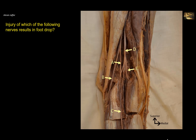Injury of which of the following nerves results in foot drop? First of all, let's be oriented. This is the diamond-shaped popliteal fossa, a dissection behind the knee joint. Look at the directional signs here — this is the medial side, and here is the lateral side. You can see the tendon of biceps femoris muscle, and parallel with the tendon of biceps, nerve B is the common peroneal nerve. If we follow it upwards, we find it at the apex of the popliteal fossa, where the common peroneal nerve splits from the tibial nerve.